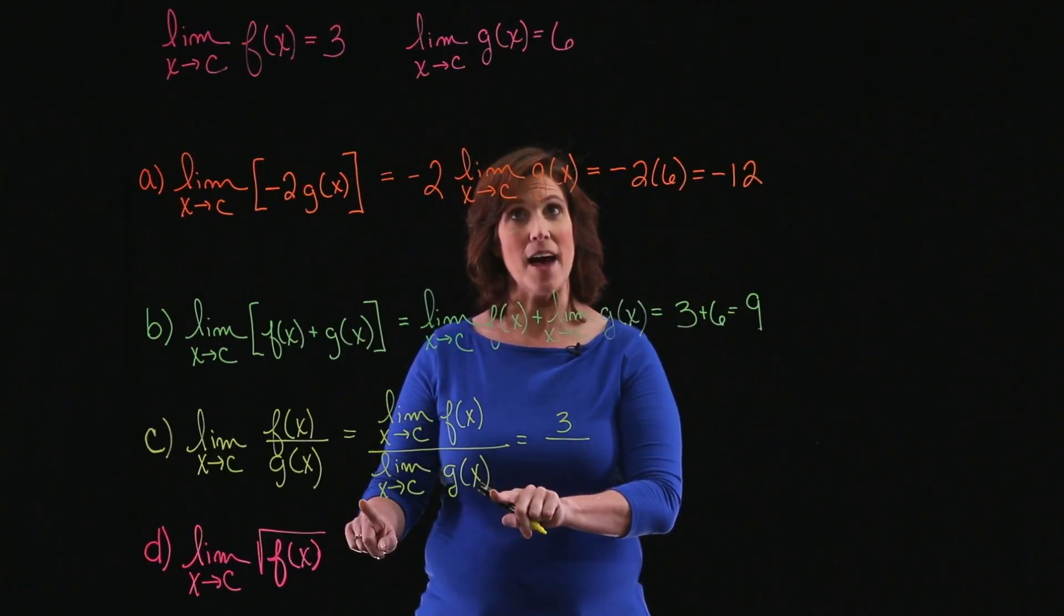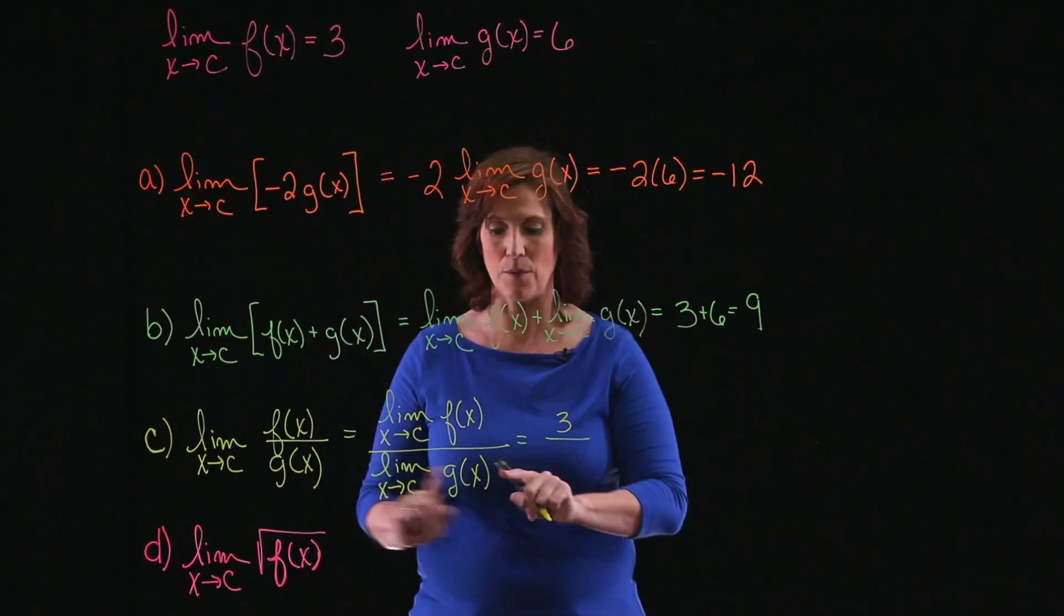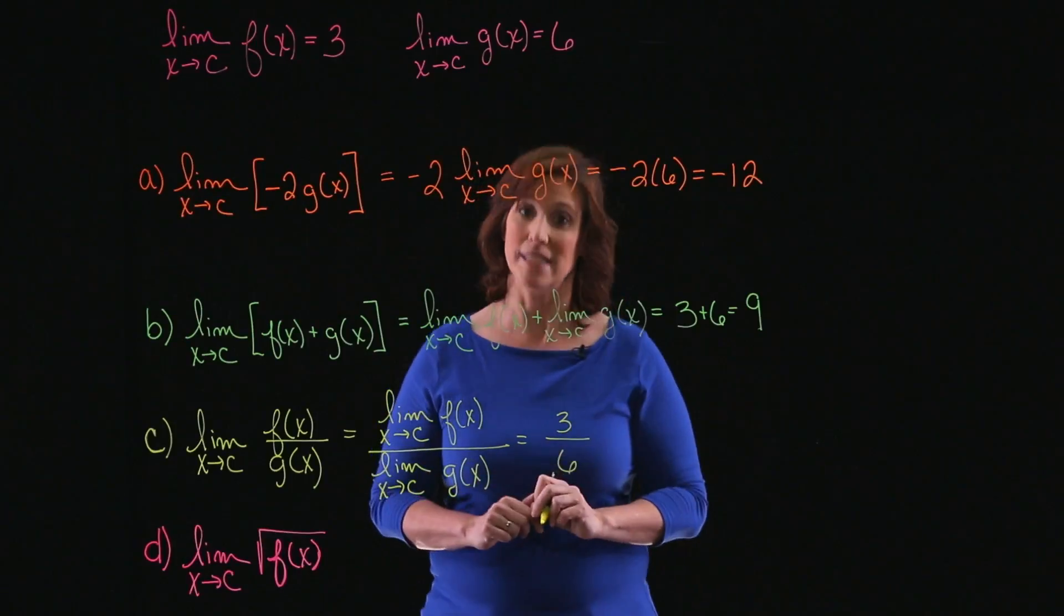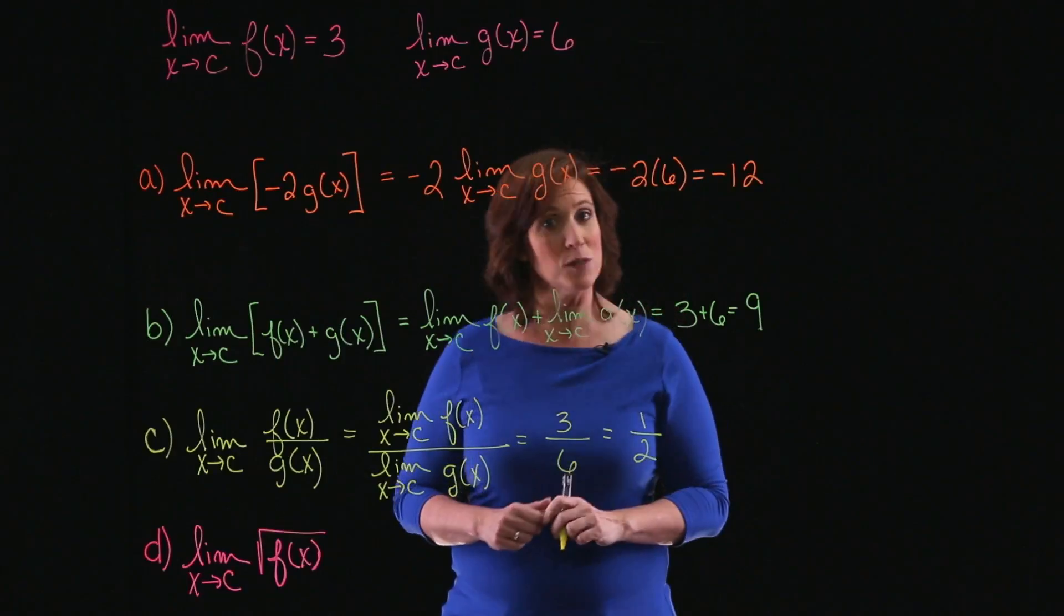my function f approaches the number 3. And as x approaches c, g of x approaches 6. Remember, I needed to be careful to make sure that that didn't approach 0. But it approaches 6, so I had no trouble. And the overall limit is 1 half.